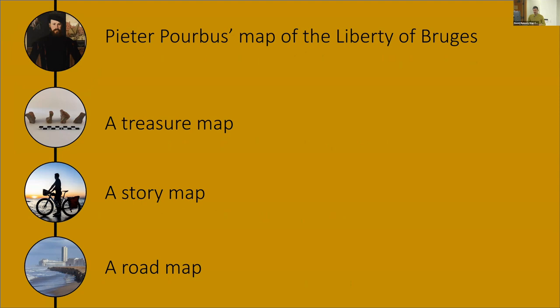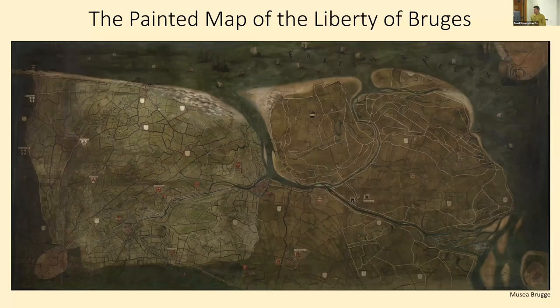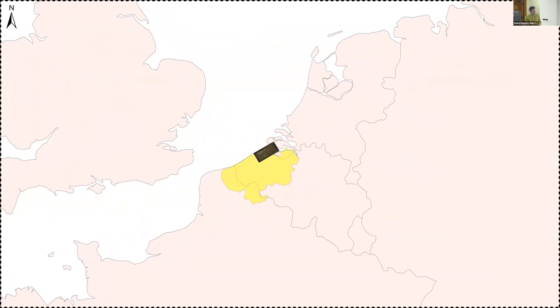Let's start with a short introduction of the map itself. The map is depicting an area on the border of today's Netherlands and Belgium, with the largest part in Belgium. In the medieval period and the 16th century, this region was part of the county of Flanders, which was one of the most important counties in northwestern Europe at that time. The Liberty of Bruges was part of this county.